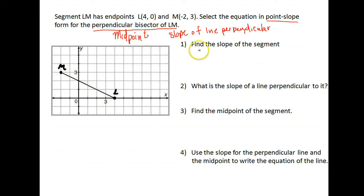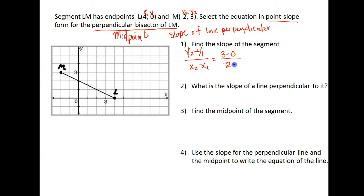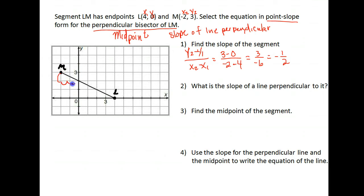Let's start by finding the slope of our line. Remember, to find slope you do y2 minus y1 over x2 minus x1. Our points: x1, y1 is (4, 0) and x2, y2 is (-2, 3). So we have 3 minus 0 over negative 2 minus 4, which gives us 3 over negative 6. That reduces to negative 1 half. You could also count the slope on the graph — it goes down 1 and 2 to the right, confirming a slope of negative 1 half.